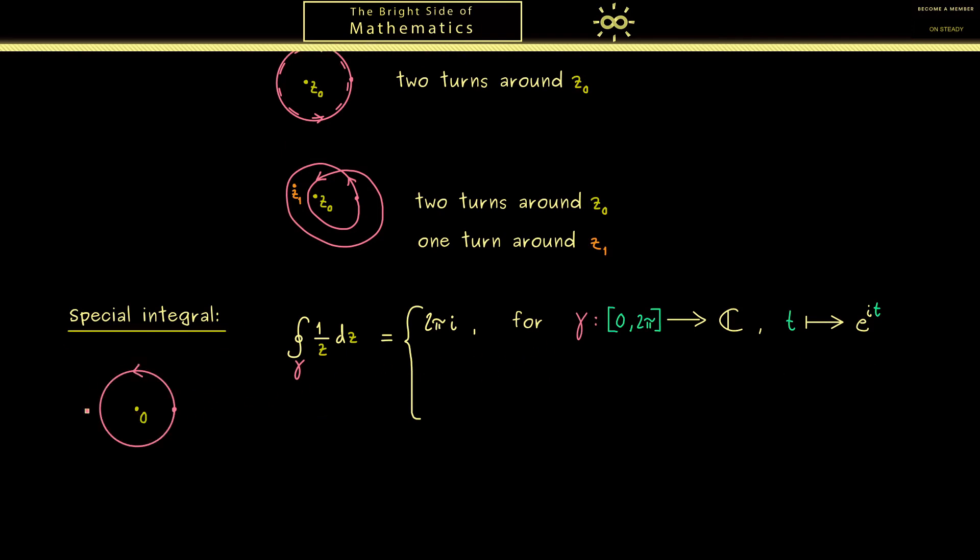Indeed, this was not hard to calculate and it gives us the constant 2πi. The picture here looks the same as before, but now z₀ is just the origin. Moreover, if we want two turns around the origin we can just change the curve with the interval [0, 4π]. Then without a surprise the calculation gives us 4πi.